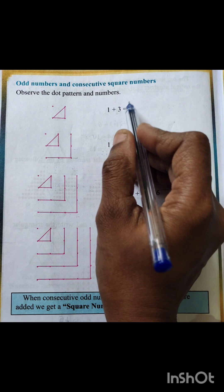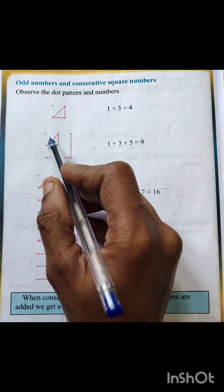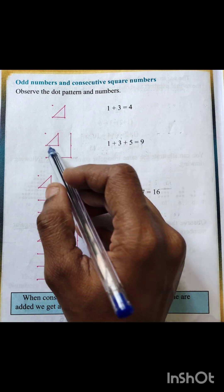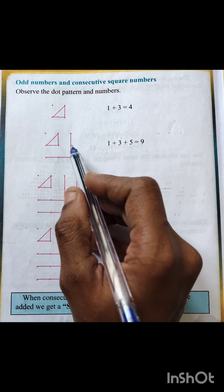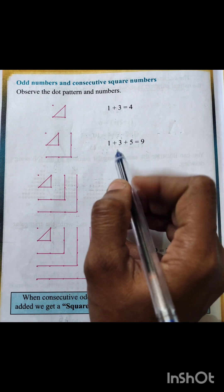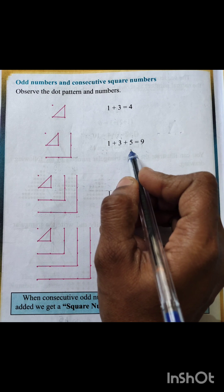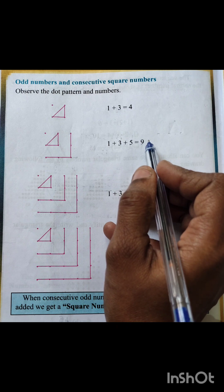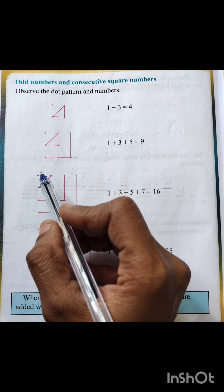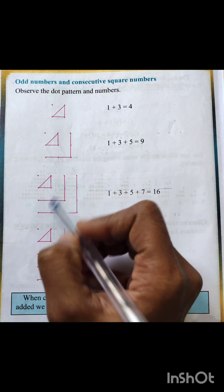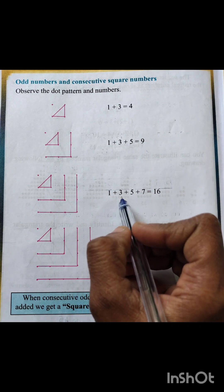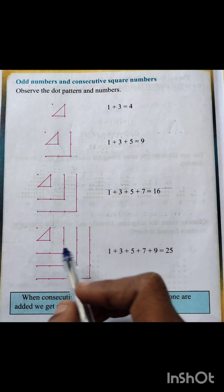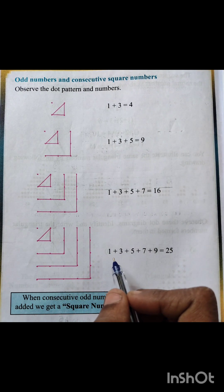One plus three is equal to four, and four makes a square number. Now one and three are odd numbers. One, two, three, four, five — the next one is also an odd number. If you add one plus three plus five: one plus three is four, four plus five is nine, and nine is also a square number. Next: one, three, five, and seven. One plus three plus five plus seven is equal to sixteen — sixteen is also a square number.